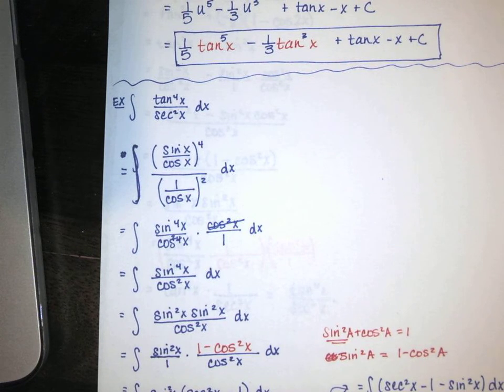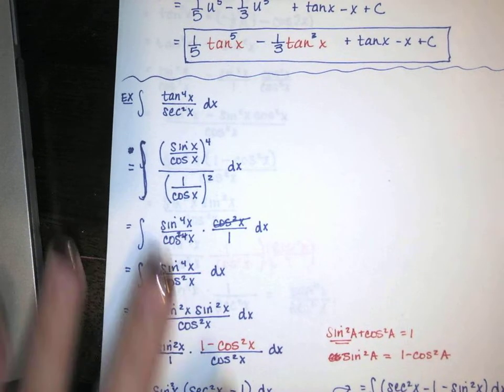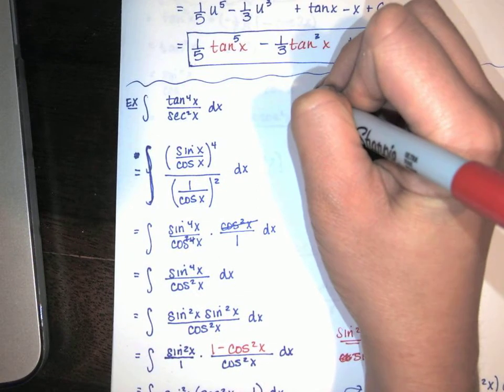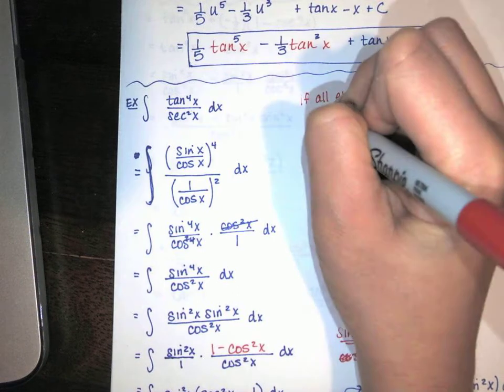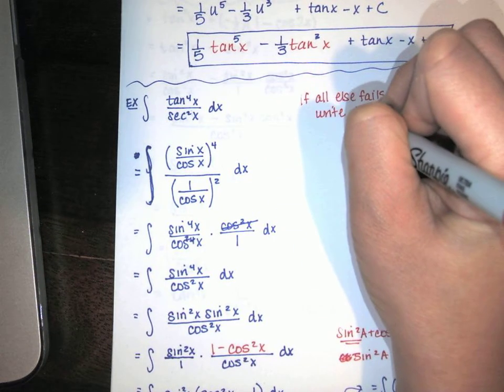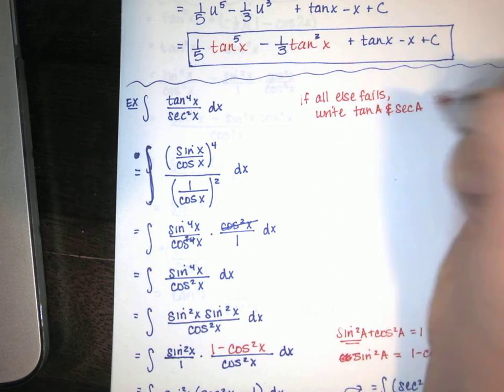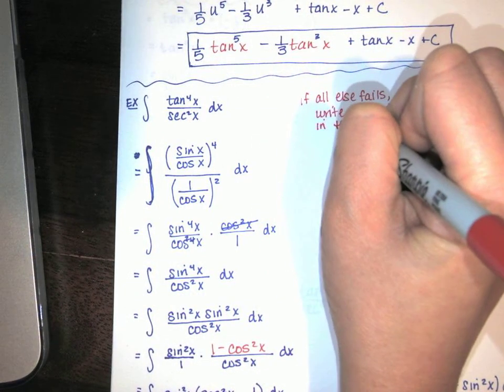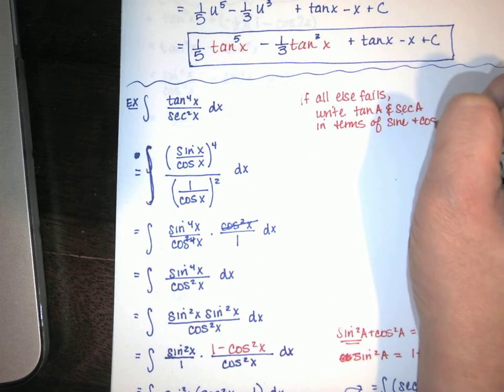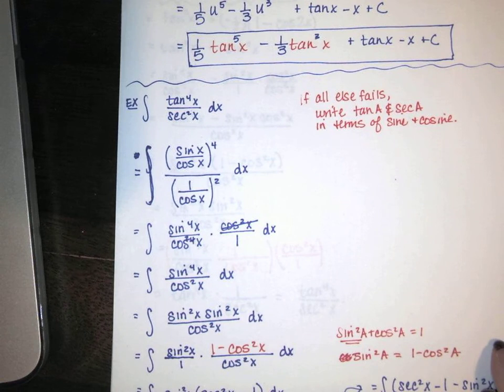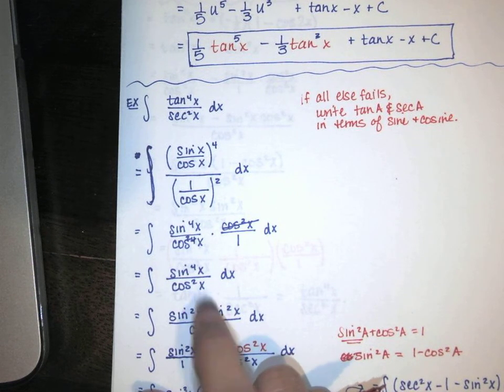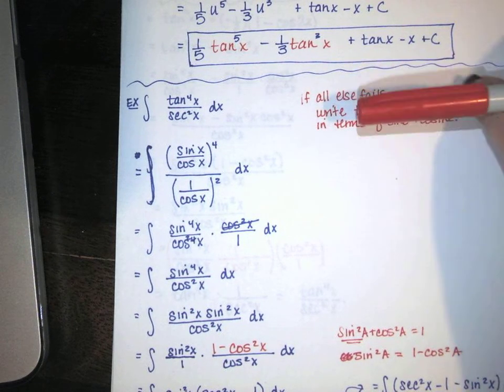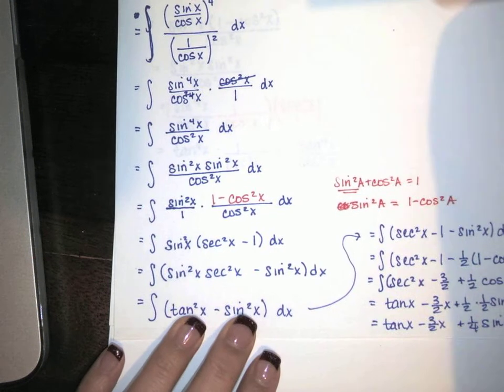So that is the last guideline for powers of secant and tangent. Yes, if all else fails, here's the guideline. Write tangent of your angle and secant of your angle in terms of sine and cosine. And you might use the identities or the list of rules for powers of sine and cosine. Or you might end up here like we did and those don't work. So you just start using Pythagorean identities and manipulating until you get to a point where you can finally take the antiderivative. That worked out for us.